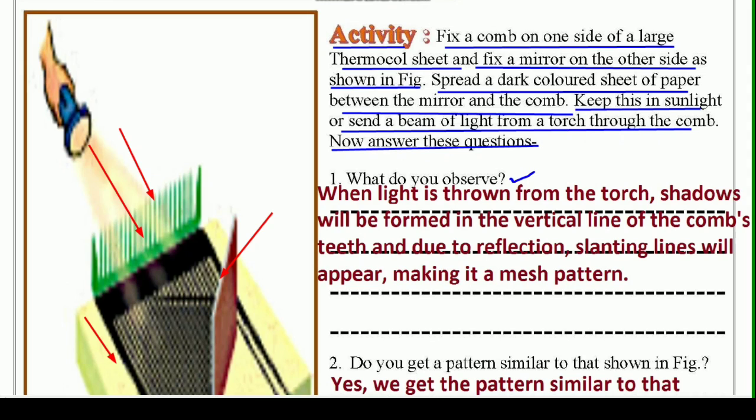First question is, what do you observe? When the light is thrown from the torch, jab hum light ko torch se kanghi ke upar daalte hain, shadows will be formed in the vertical lines of the comb's teeth. And due to reflection, joh comb's teeth ki reflection mirror mein banti hai, slanting lines appear, jo reflection hogi na wo slanting line ke roop mein aapko dikhaayi degi, making it a mesh pattern. Ek jaal ka pattern ban jayega. This is the mirror and comb reflection.